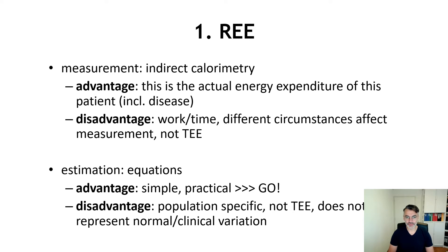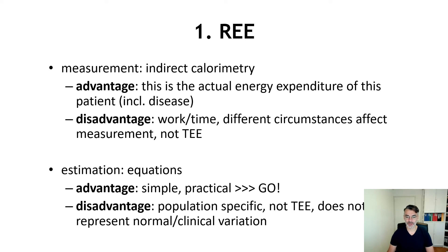The alternative to measurement is estimation with equations, which is a simple and practical approach. However, the disadvantage is that all these equations are population specific. They do not provide the total energy expenditure, so you still need some extra level to add to the equation, and they do not represent normal clinical variation. So you don't actually predict this specific patient under these specific circumstances at this moment.